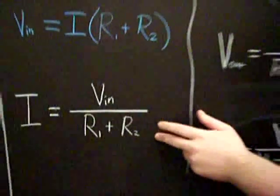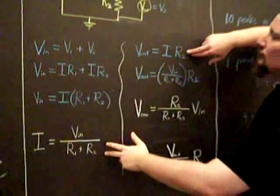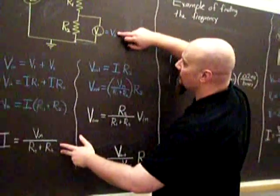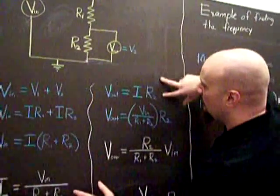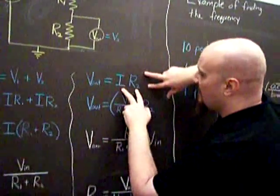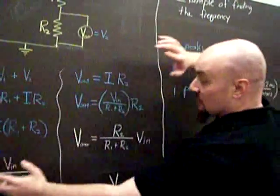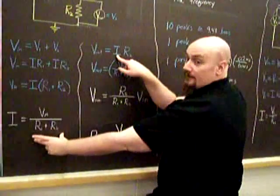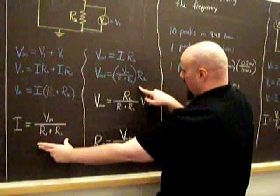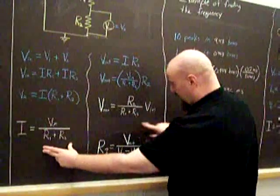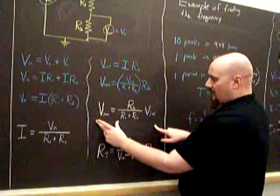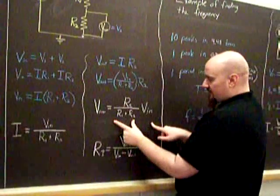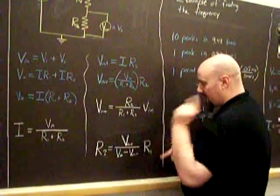Terrific. So now let's take a closer look at V-out, which is the voltage across R2. Well, that's IR2. And then we use substitution — plugging in the I we just found — and that gives us our final expression for V-out: R2 over the series sum of R1 plus R2, times V-in.